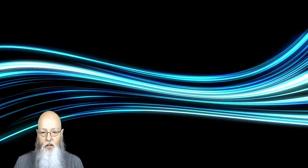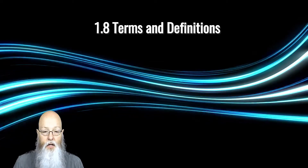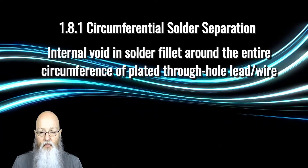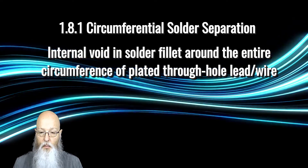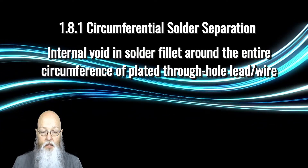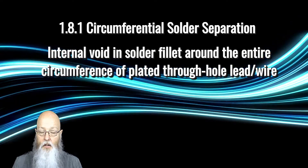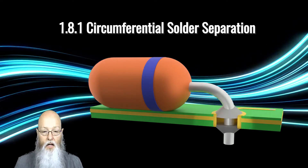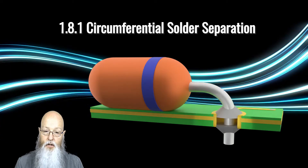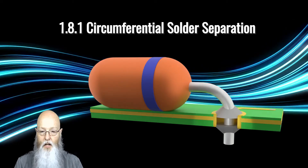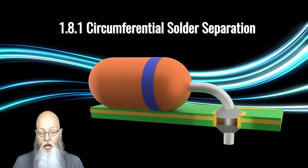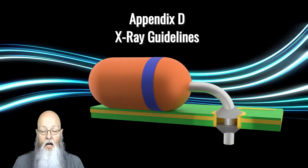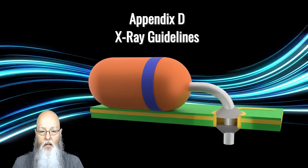Skipping some editorial changes, we next move to the Terms and Definitions section. Here we find a new term, 1.8.1, Circumferential Solder Separation. The term is defined as an internal void in the solder fillet extending around the entire circumference of a plated through hole and lead or wire. There is no continuous solder between the solder source side fillet and the solder destination side fillet. When a through hole connection is x-rayed, a circumferential solder separation is seen as a solder fillet on the source side, then a solder fillet on the destination side, but there is no flow-through solder filling in the hole. A typical cause of this condition could be applying solder to both sides of a plated through hole. This definition is also related to the new Appendix D, which contains x-ray guidelines.